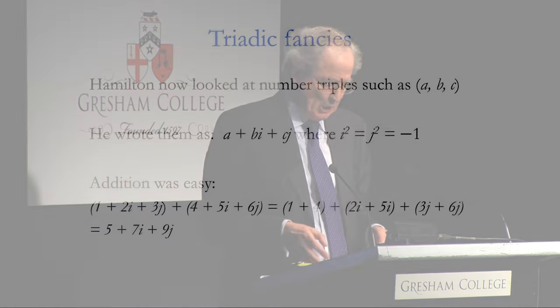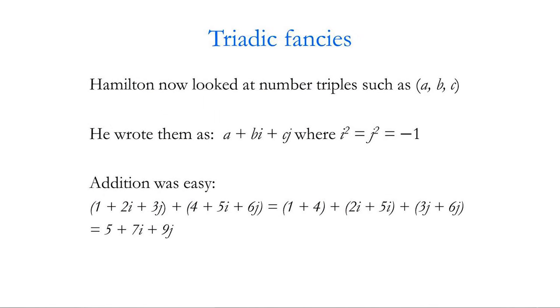Hamilton avoided talking about imaginary quantities by dealing with pairs. The logical development was to consider number triples or triadic fancies as Hamilton called them. He had a way with language. He now looked at number triples such as (A,B,C). I'm going to parallel what I did with the complex numbers until we run into trouble. He wanted to find rules for their addition and their multiplication. By analogy with complex numbers, he wrote them as A + Bi + Cj where i² = j² = -1. Addition is easy: if you add two triples together, you just add the first entry, add the second entries together, add the third entries together. I've got an example down there at the end of the slide.